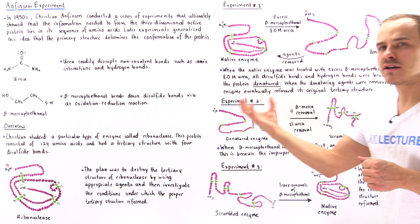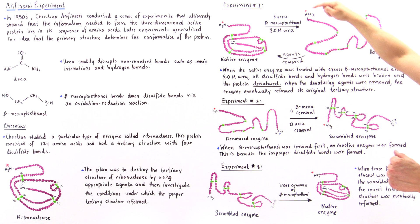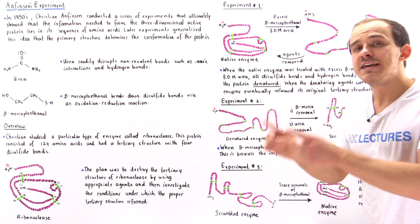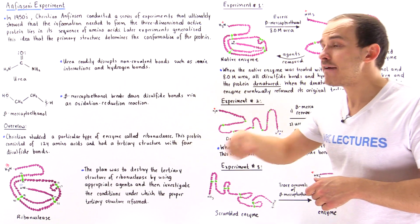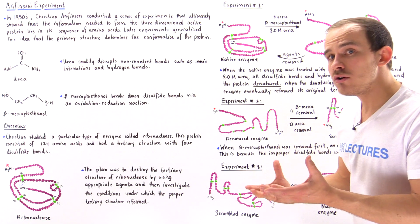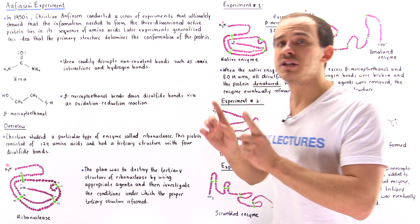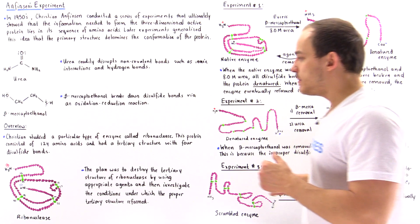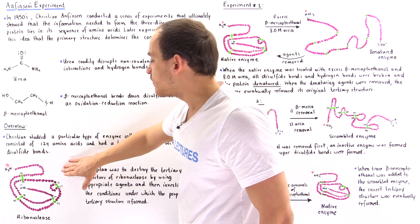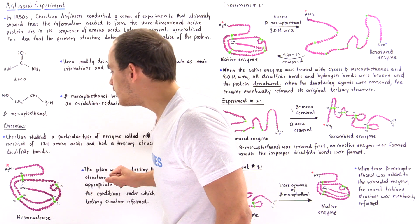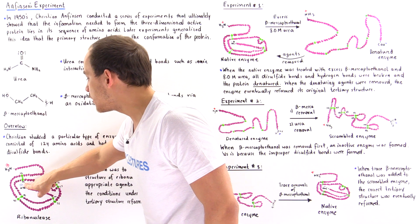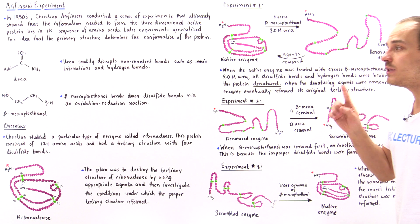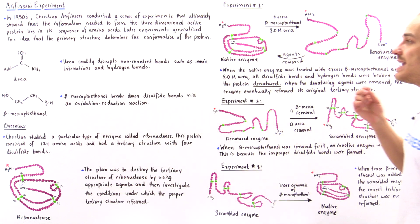In experiment two, he took the beaker containing the denatured enzyme with excess beta-mercaptoethanol and urea, but instead of removing both agents simultaneously, he first removed the beta-mercaptoethanol and then, after some time, removed the urea. What he found was that the enzyme formed was not in its biologically active state — it was scrambled, containing the incorrect pairing of disulfide bonds. For example, the native enzyme pairs the 26th and 84th amino acids, but here a bond formed instead between the 26th and 40th, creating an inactive molecule.